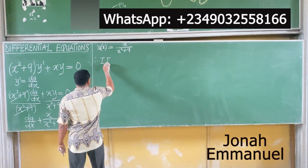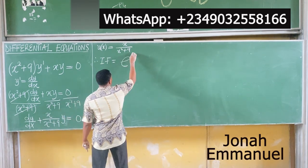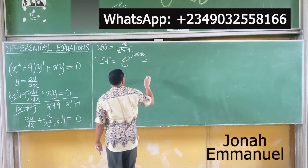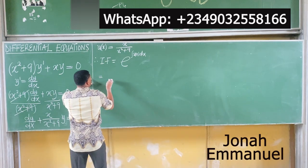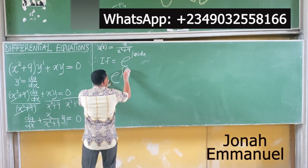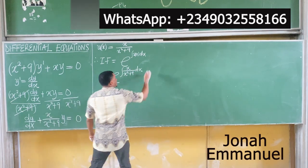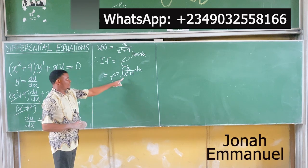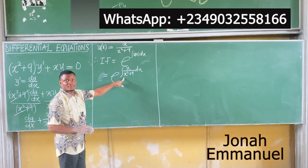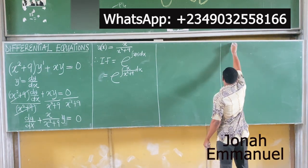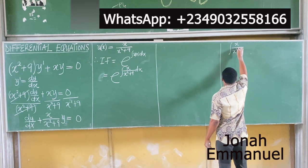So therefore, the integrating factor will be equal to exponential of the integral of u of x dx. That's equal to exponential of the integral of x all over x squared plus 9, dx. How do you solve this integral?